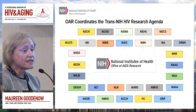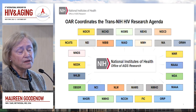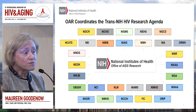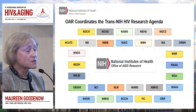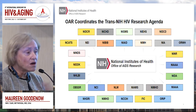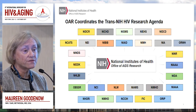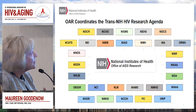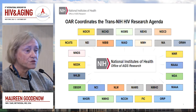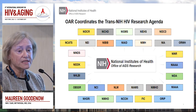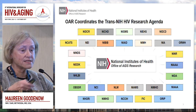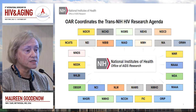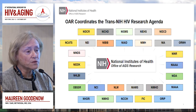At the NIH, the organization is comprised of 27 institutes and centers, plus a number of offices. Virtually all of these entities have an HIV agenda. While they develop their own scientific agendas, OAR coordinates the trans-NIH aspects, keeping a 30,000-foot-level view of what's going on in each of the institutes and centers, and working very closely with them.